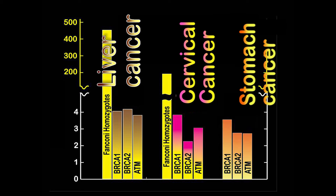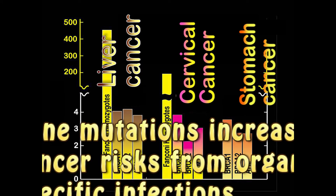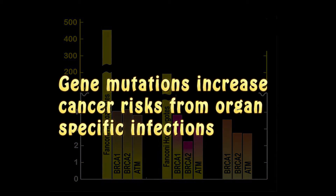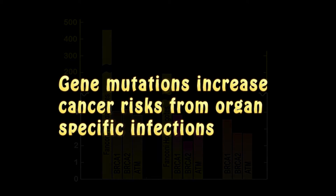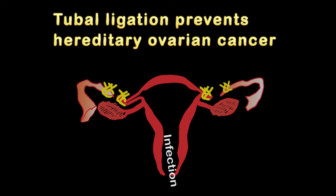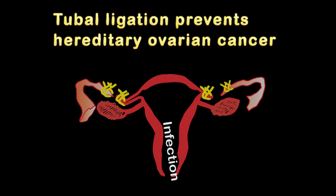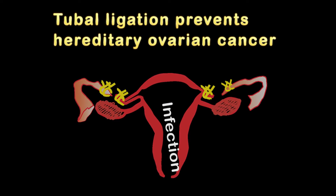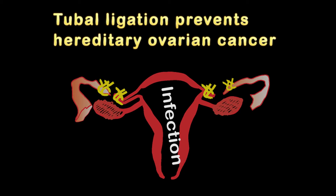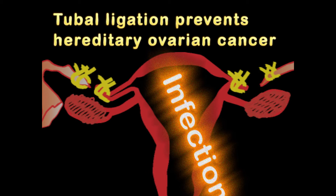So gene mutations do influence whether viral or other infections lead to cancer. The same thing seems true for ovarian cancer. Tubal ligation protects against ovarian cancer, both in normal women and in mutation carriers. One explanation for this protection is that tying off fallopian tubes prevents infections from ascending into the ovaries.